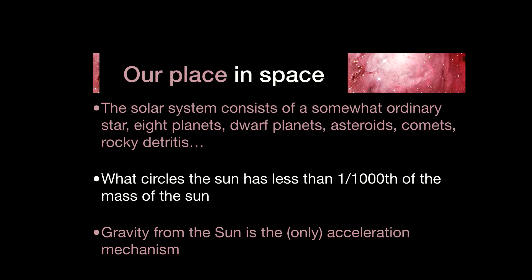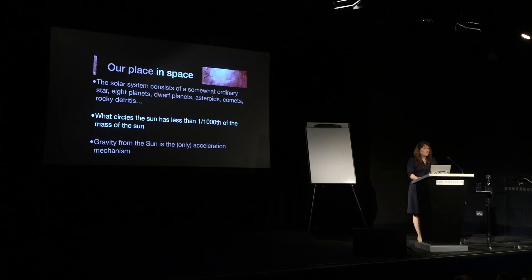The mass of the sun is two times ten to the thirty kilograms — ten to the thirty meaning a one followed by thirty zeros. It's a huge mass. Everything else outside of it is less than one thousandth of that. Gravity from the sun is the dominant acceleration mechanism for all other bodies, vastly larger than the gravitational forces one planet exerts on another. Gravity is what calls the shots in terms of the motions of bodies within the solar system.